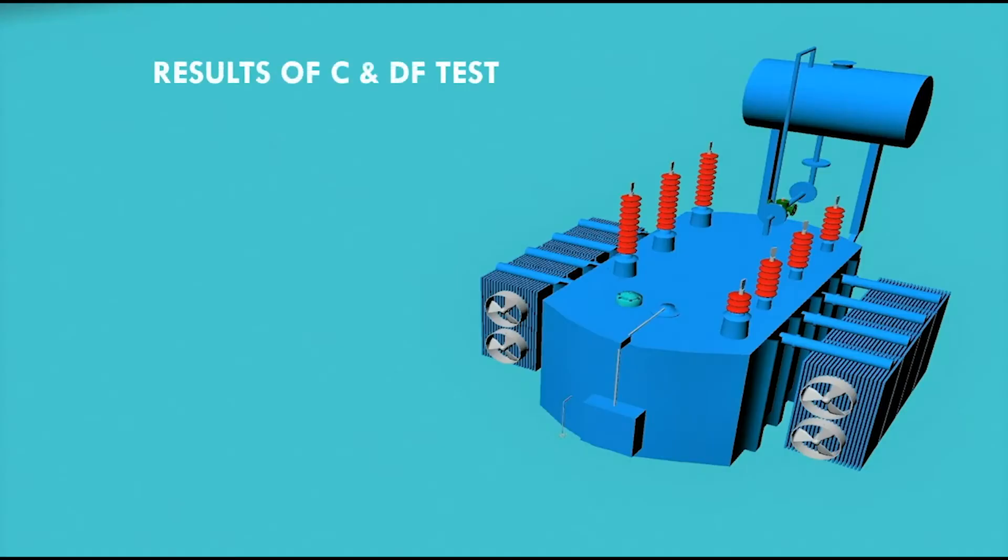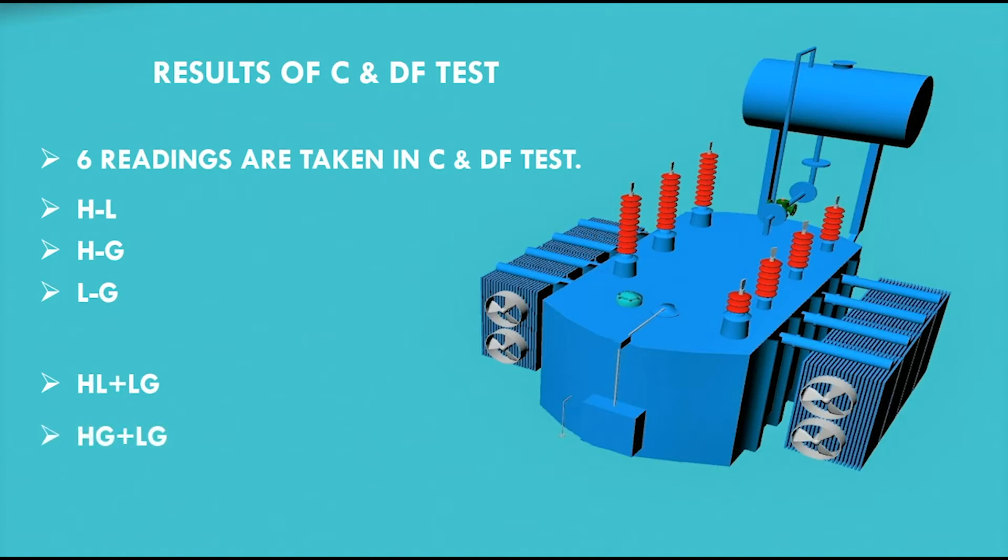Now, we come across the results of the C and DF test, where six readings are taken in C and DF test. These are HV to LV, HV to ground, LV to ground, HL plus LG, HG plus LG and HL plus HG.